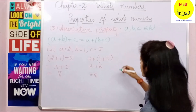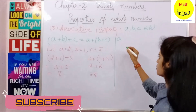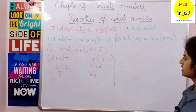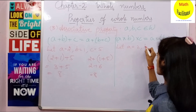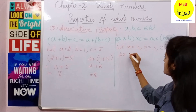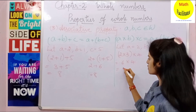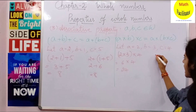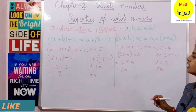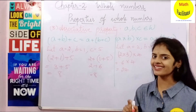Let us check for multiplication also. Under multiplication, A into (B into C) should equal (A into B) into C. Let A equal to 2, B equal to 3, and C equal to 4. A into (B into C): 2 into (3 into 4) — 3 fours are 12, and 2 into 12 is 24. (A into B) into C: (2 into 3) into 4 — 2 threes are 6, and 6 fours are 24. So A into (B into C) equals (A into B) into C. Associative property is satisfied under multiplication also.